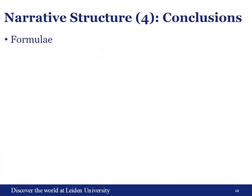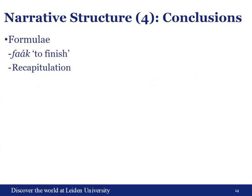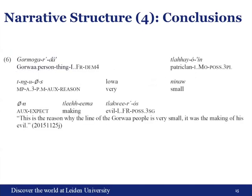Moving on to the conclusions of a narrative, there are several formulae. The most prevalent uses the verb 'to finish.' This can be done in a third-person manner: 'talk of this has finished now.' But other variations often include first-person marking, such as 'regarding this topic I have finished,' or just 'I have finished.' Something else that occurs quite often is a quick recapitulation of events and a conclusion or moral of the story — for example: 'this is the reason why the line of the Gora people is very small. It was the making of his evil.'